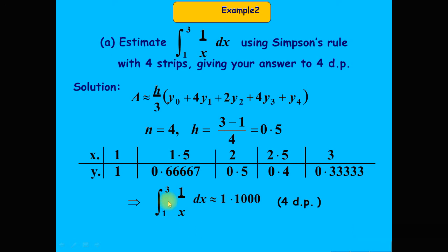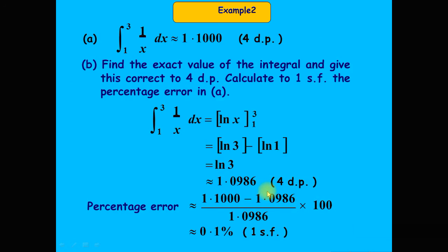The integration of 1/x from 1 to 3 using Simpson's rule equals 1.1000 correct to four decimal places. To find the exact value, the integration of 1/x is the natural logarithm of x, and we also calculate the percentage error to one significant figure.